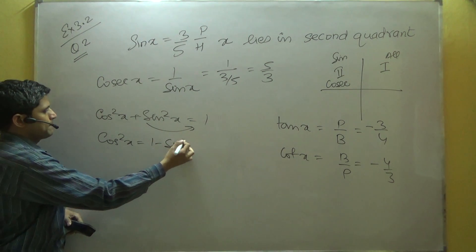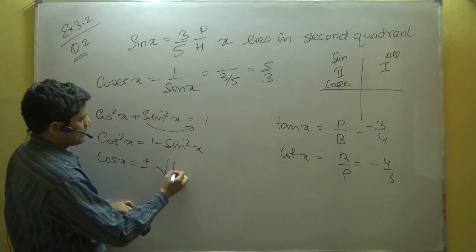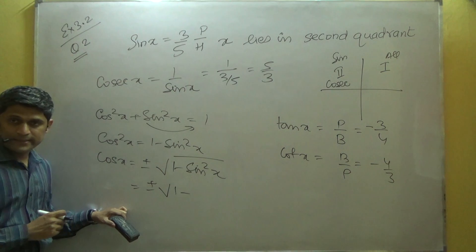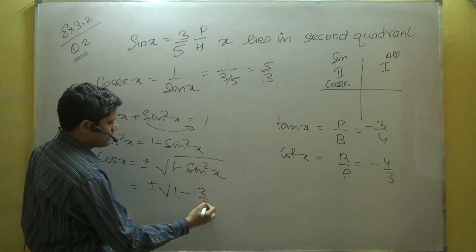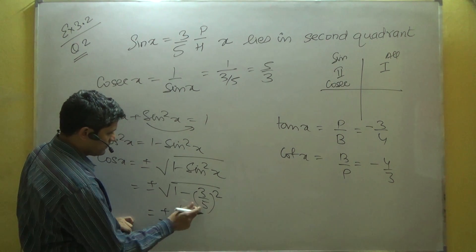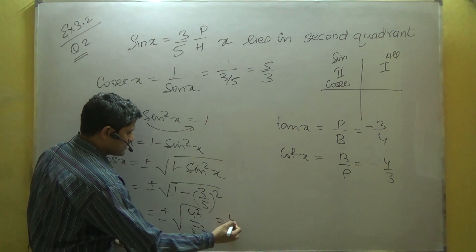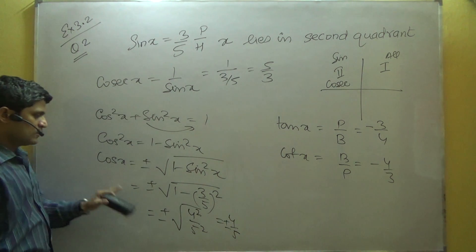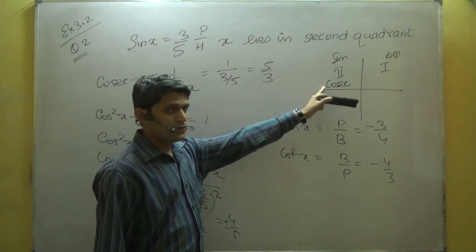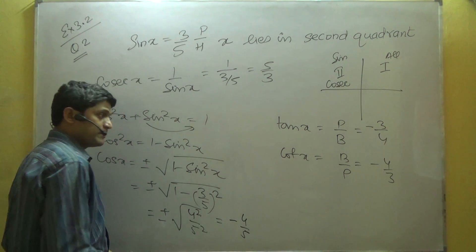From the identity, cos equals plus or minus under root of 1 minus sin squared x. That is plus or minus under root of 1 minus (3 over 5) squared. Simplifying inside: plus or minus under root of (5 squared minus 3 squared) over 5 squared, which gives plus or minus 4 over 5. Since x is in the second quadrant, cosine is negative, so cos x equals minus 4 over 5.